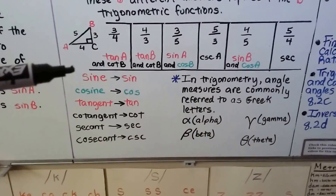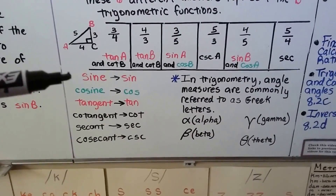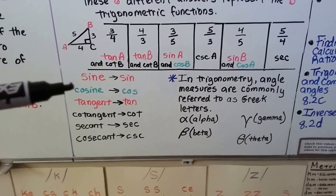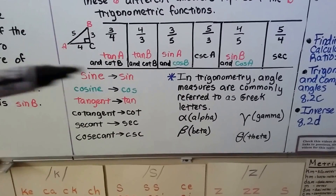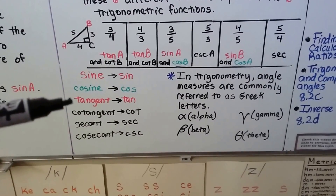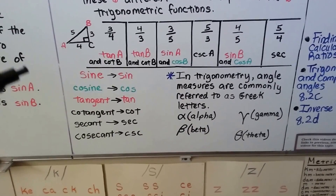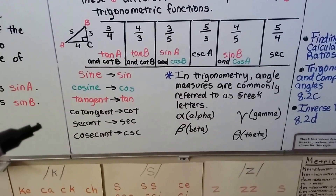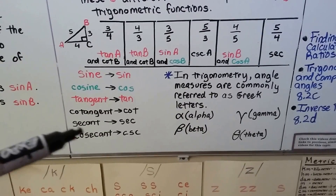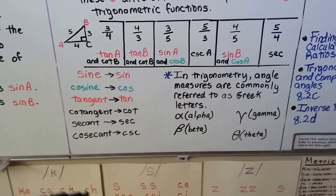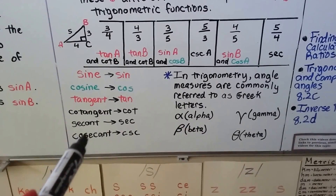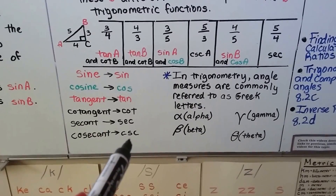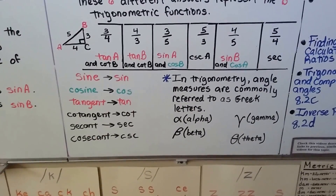These are the abbreviations we use: for sine, S-I-N; for cosine, C-O-S; for tangent, T-A-N; for cotangent, C-O-T; for secant, S-E-C; and for cosecant, C-S-C.